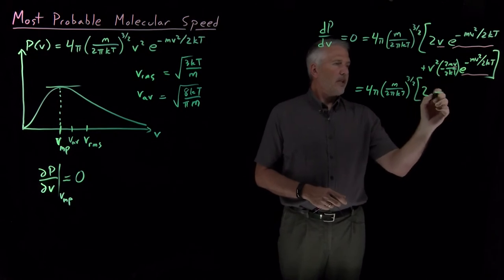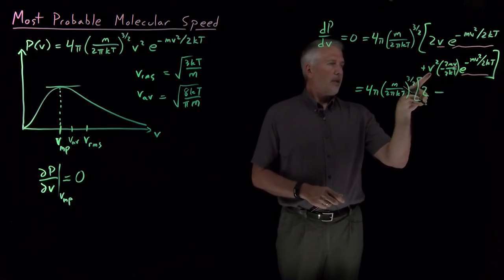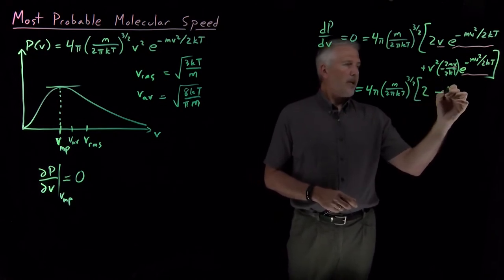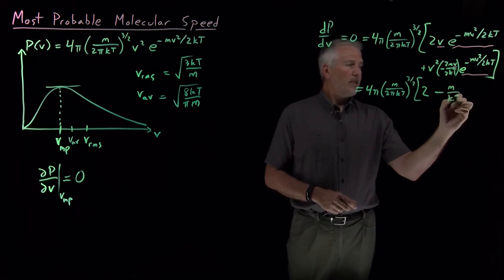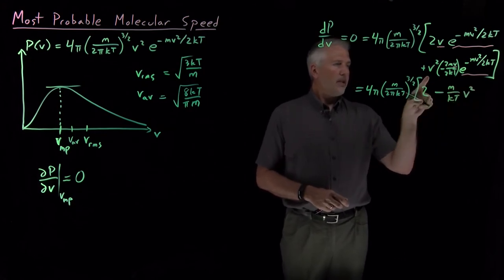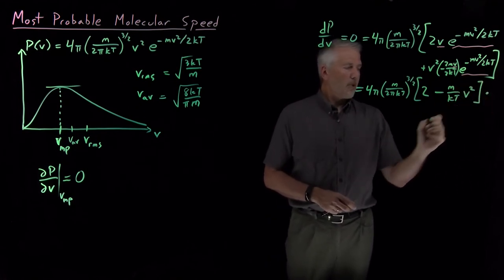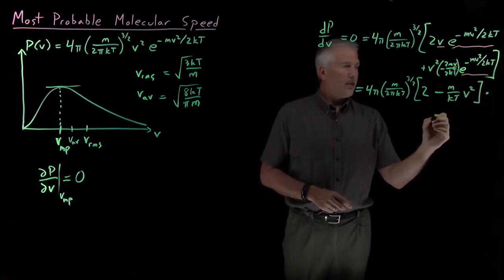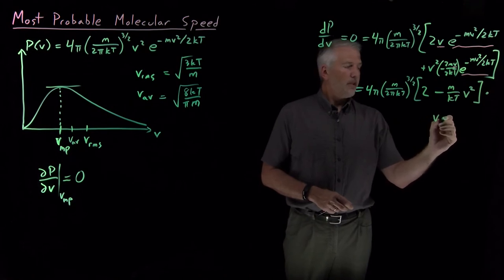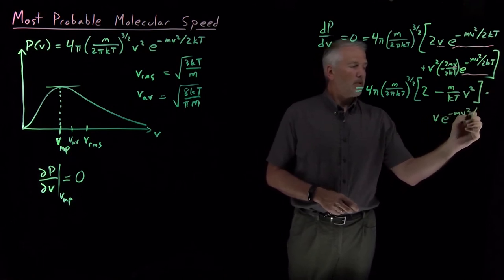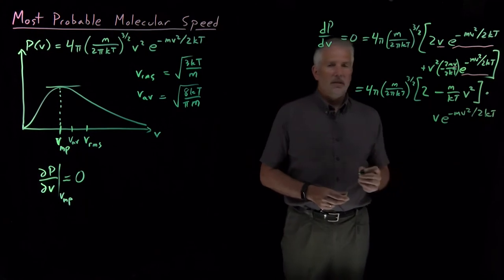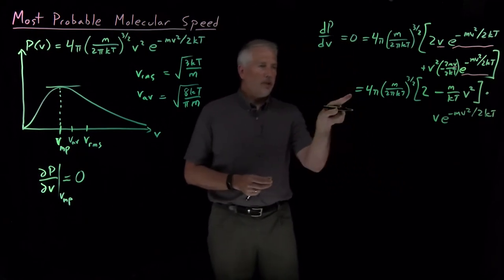So what's left after I pull those things out of the brackets is I have a 2, a negative sign from the second term. The 2s cancel, but I have an m and a kT and a V squared that doesn't get pulled out. And that's all multiplied by one factor of V e^(-mV²/2kT).